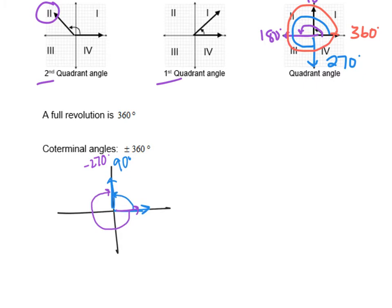They're called coterminal angles, because the terminal side of each angle is in the same position. One was 90, one was negative 270. Those are coterminal angles. You can find coterminal angles by adding and subtracting 360 degrees. We had 90 degrees first. If I subtract 360 degrees, it's taking me around a full rotation and landing in the same spot. But, it is giving me a different angle of negative 270 degrees.